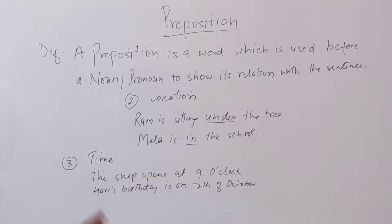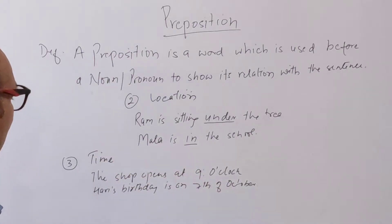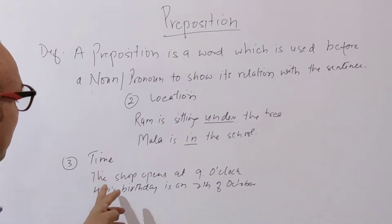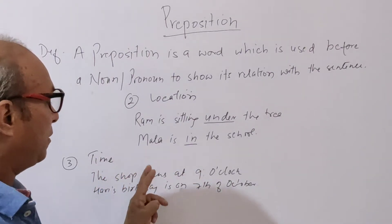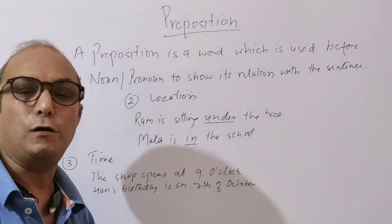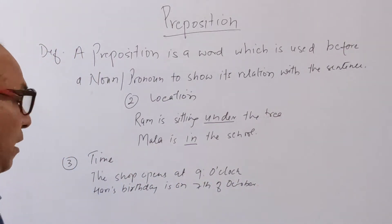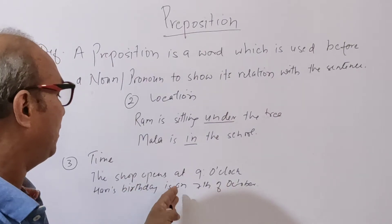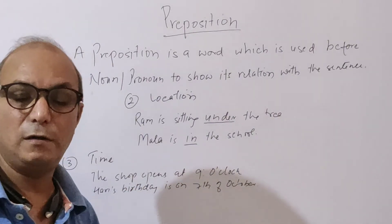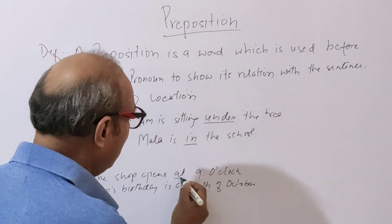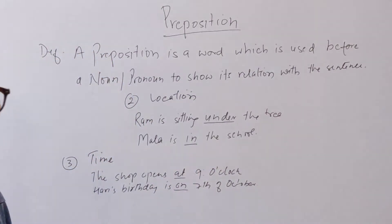Number three is time. Here is the time preposition. For the first example: The shop opens at 9 o'clock. It is 9 o'clock — 'at' 9 o'clock. Harry's birthday is on the 7th. The shop opens at 9 o'clock. Here 'at' and 'on' are used as time prepositions.